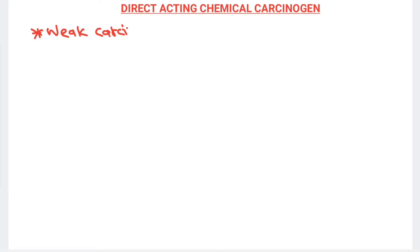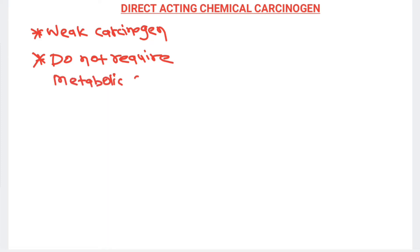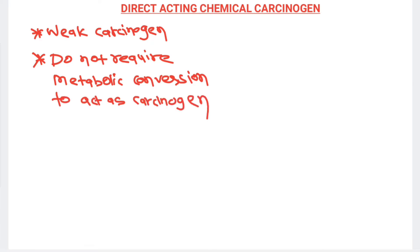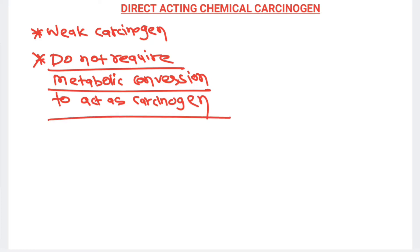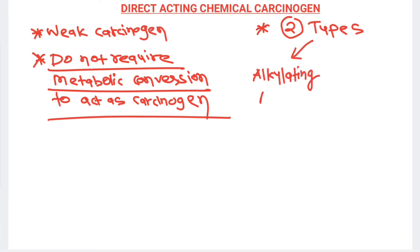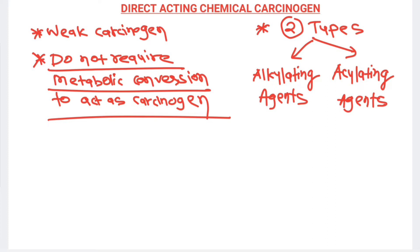Direct acting chemical carcinogens are weak carcinogens and they don't require any metabolic conversion to act as a carcinogen. They are direct acting agents. The examples of direct acting chemical carcinogens are of two types: alkylating agents and acylating agents.